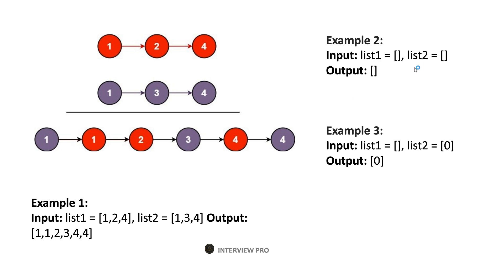In example two, both the lists are empty, so we'll simply return an empty output. Then we have another example where one of the lists is empty — in such a case we would return the non-empty list.